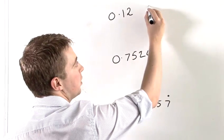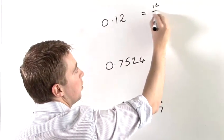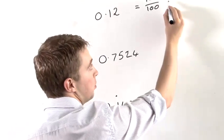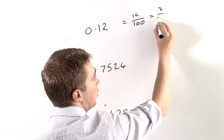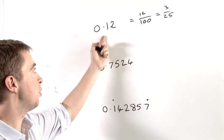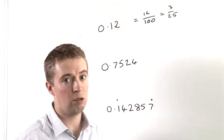So this is in fact equal to 12 over 100. And we can simplify that by dividing top and bottom by four to get 3 over 25. So this decimal here, 0.12, is equal to 3 over 25.